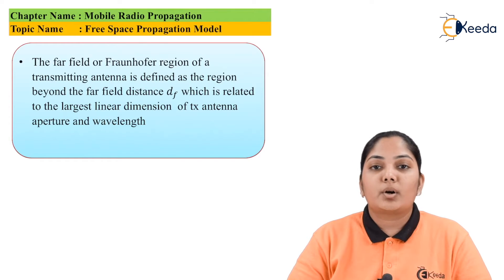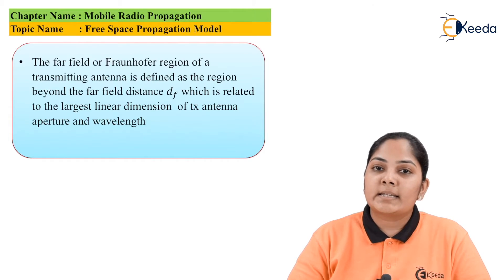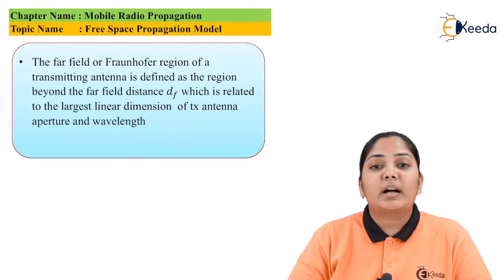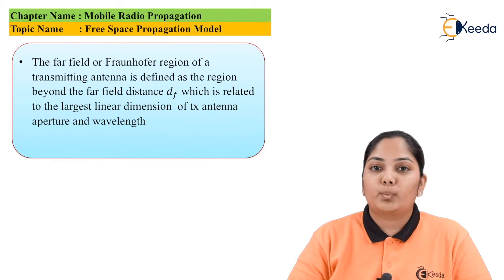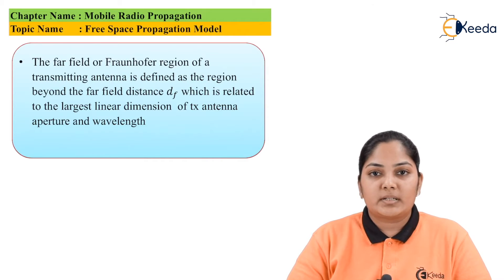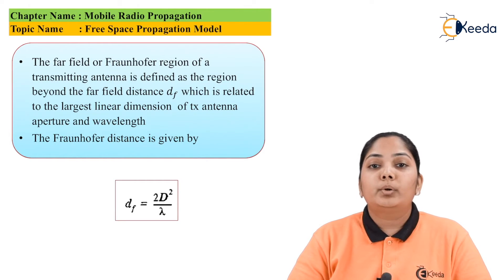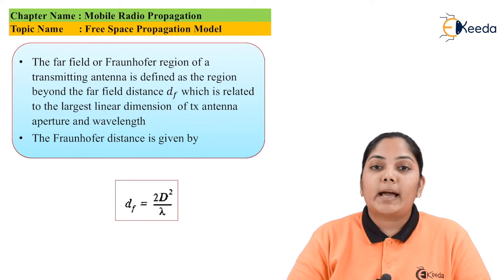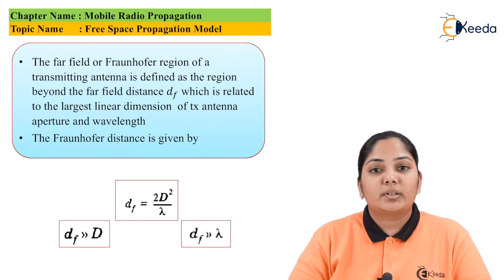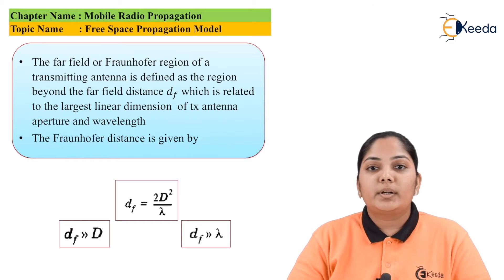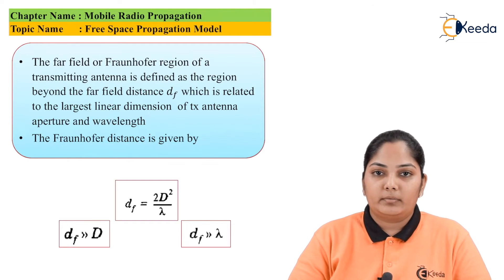Let us now look at the concept of the Fraunhofer distance. The far field or Fraunhofer distance of a transmitting antenna is defined as the region beyond the far field at a distance df, which is related to the largest dimension of the transmitting antenna and the wavelength. It is given by: df = 2D² / λ, where D is the largest dimension of the antenna. The conditions are that df must be greater than D and also greater than λ.